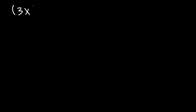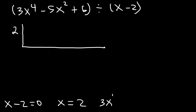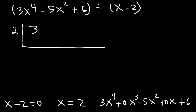Now let's work on one more example: 3x to the fourth minus 5x squared plus 6, divided by x minus 2. It's very similar to the last example, so pause the video and try this problem. Setting x minus 2 equal to 0 gives x equals 2. Keep in mind — don't forget about 0x cubed and also 0x. There are two zeros we have to deal with. So the coefficients are 3, 0, negative 5, 0, and 6.